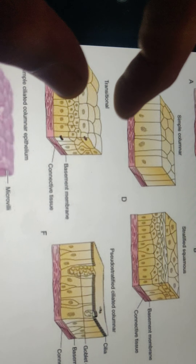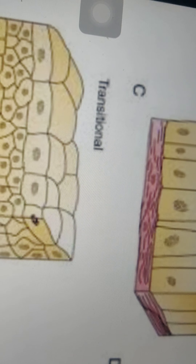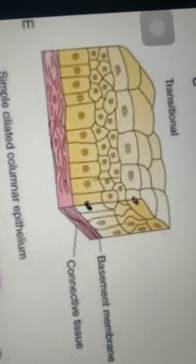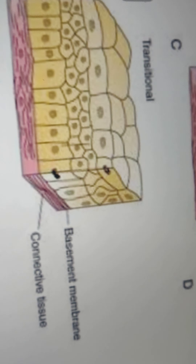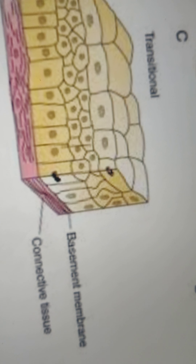Next is the transitional epithelium, which is another type of stratified epithelial tissue. It is also composed of several layers, and here we mainly have pear-shaped cells. The remaining cell types such as columnar and cuboidal cells are also present, with the pear-shaped cells present on top.